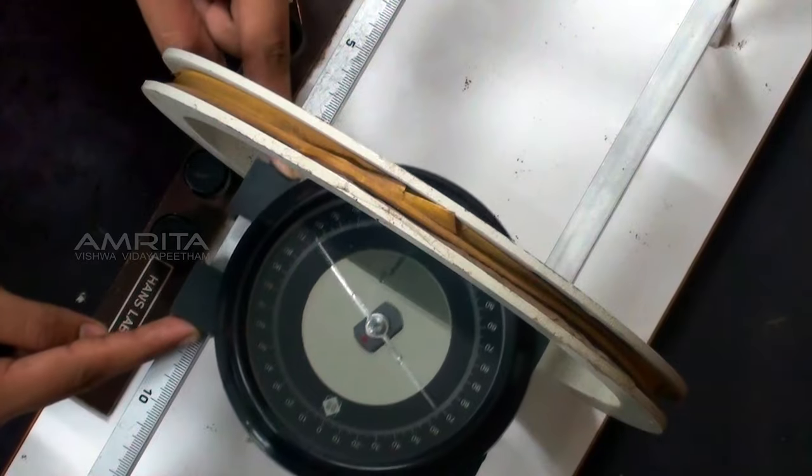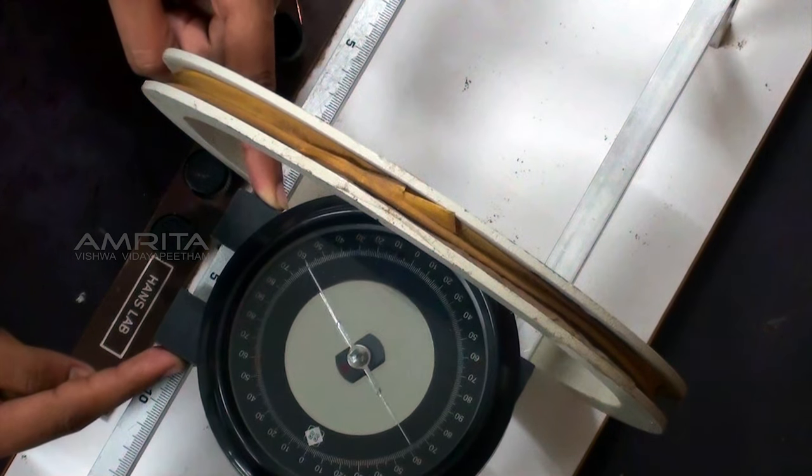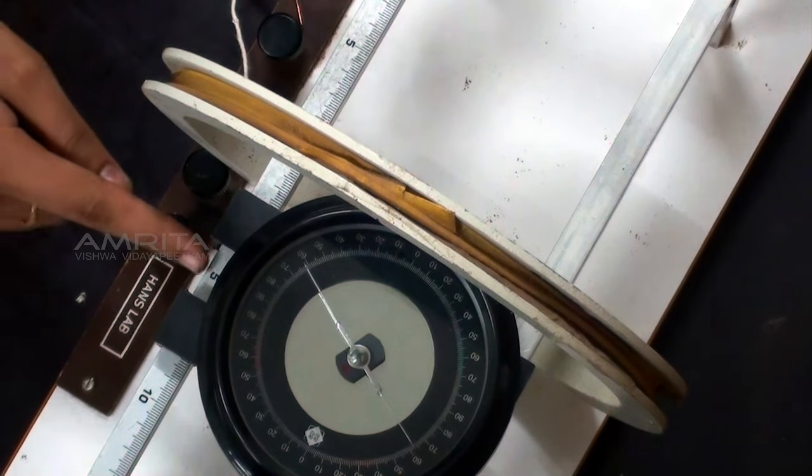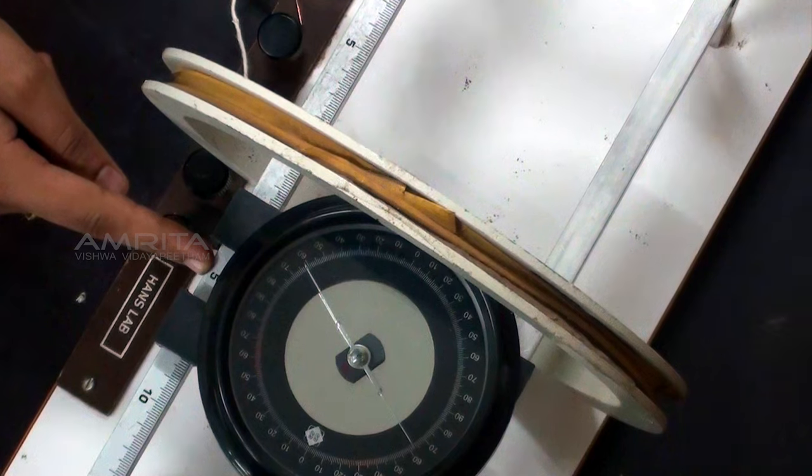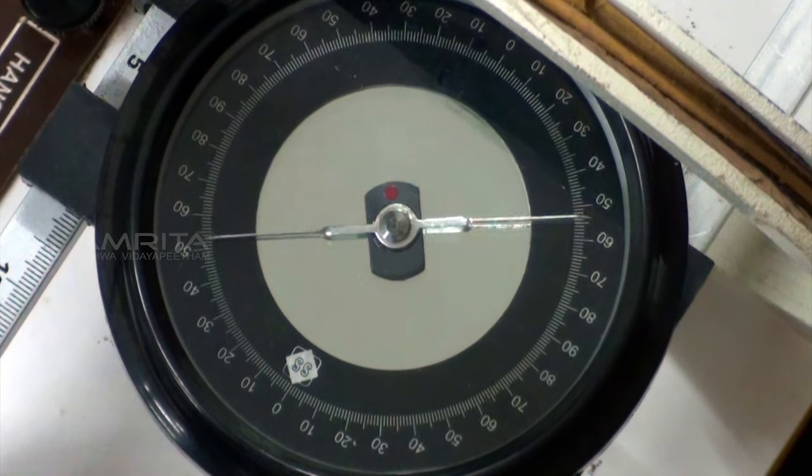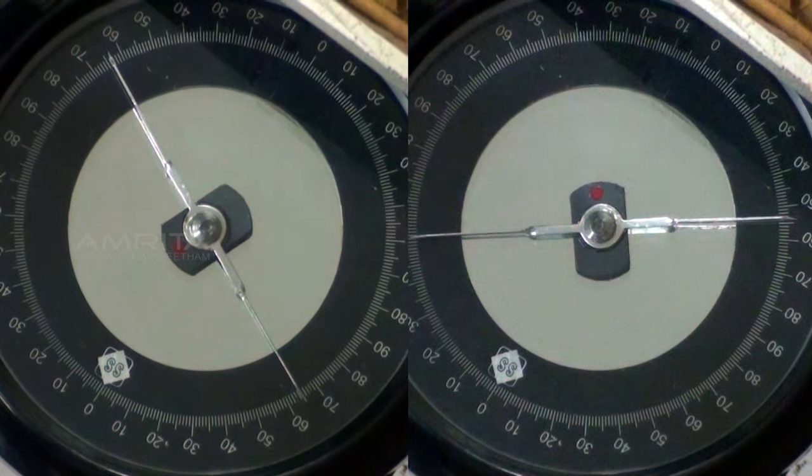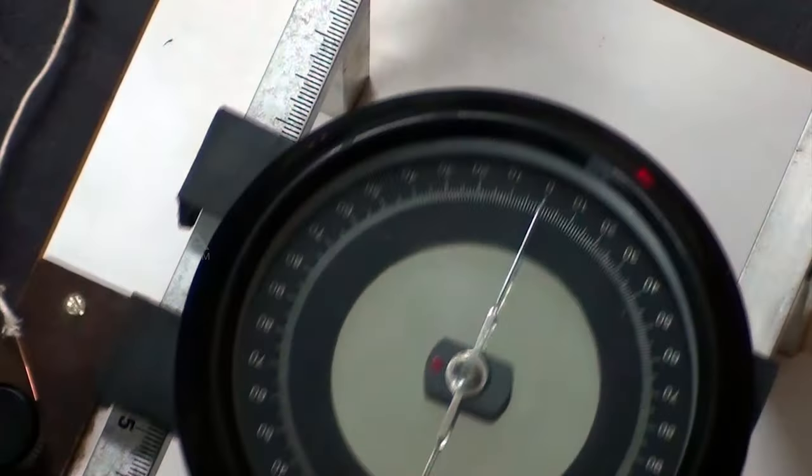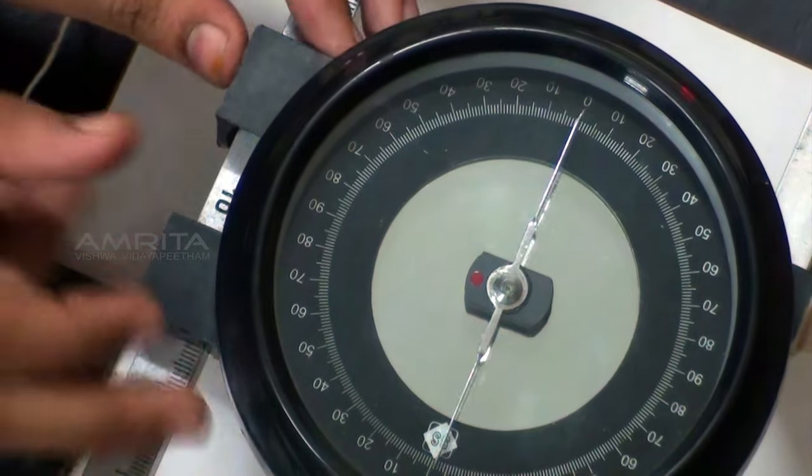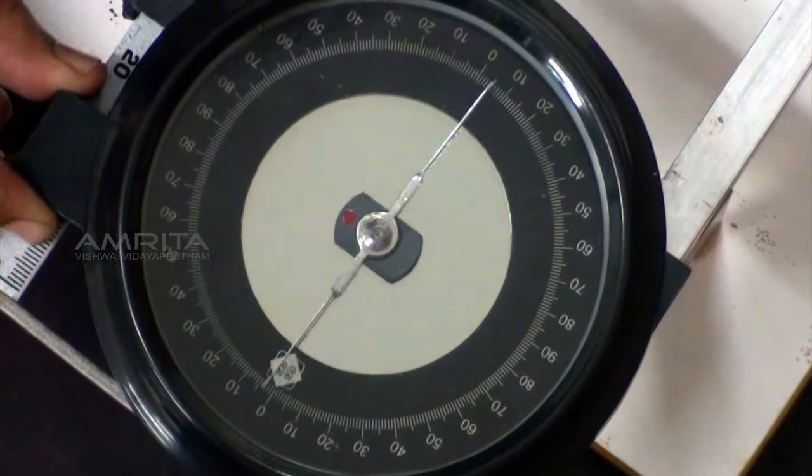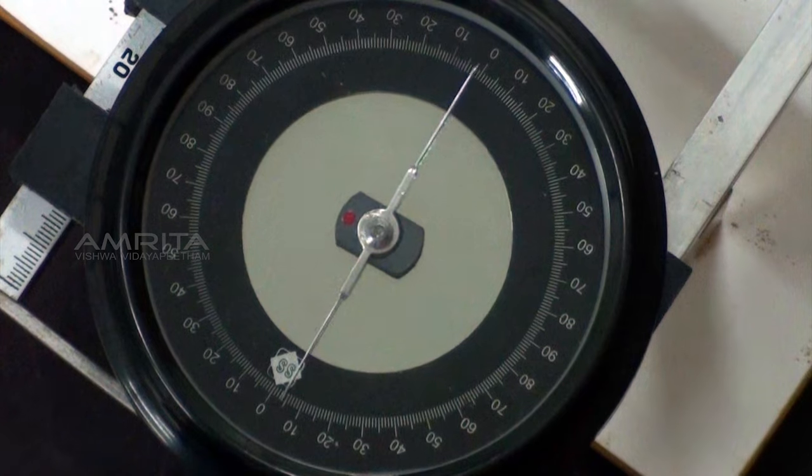Then place the compass box at another distance, say 5 cm, on the right side from the center of the coil. Note the deflection of the aluminum pointer for direct current and reverse current. Calculate the mean deflection θ. Repeat the same procedure by placing the compass box at different distances on both sides from the center of the coil.